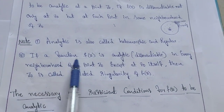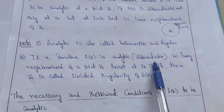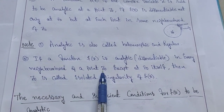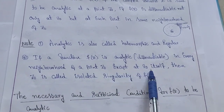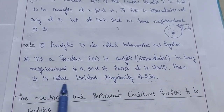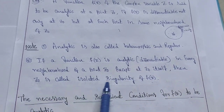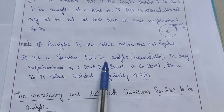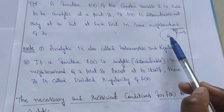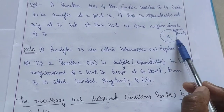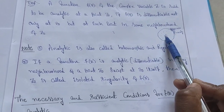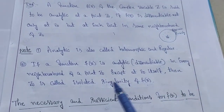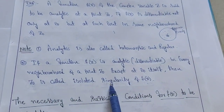If a function f of z is analytic or differentiable at every neighboring point of z naught except the center point itself, then z naught is called an isolated singularity of f of z. That means if the function is differentiable at all points except the center point, we call that point an isolated singularity.